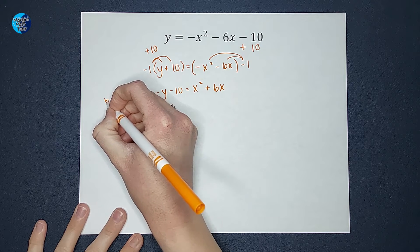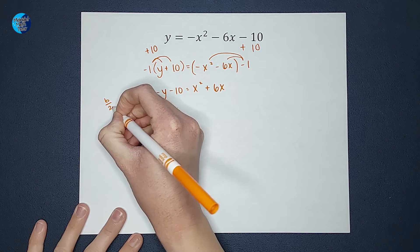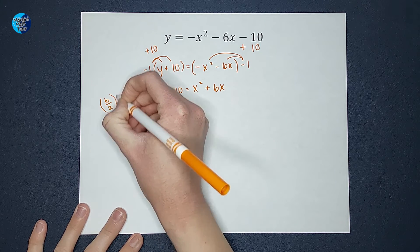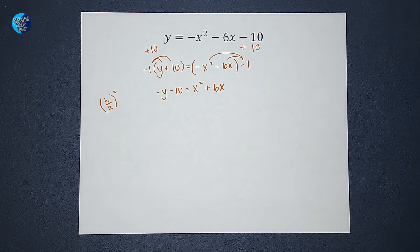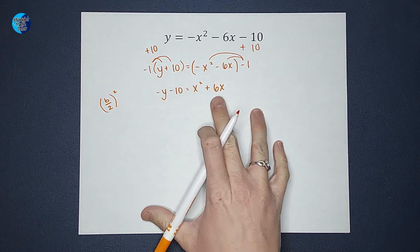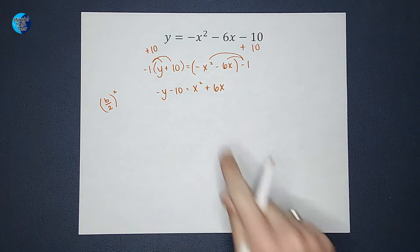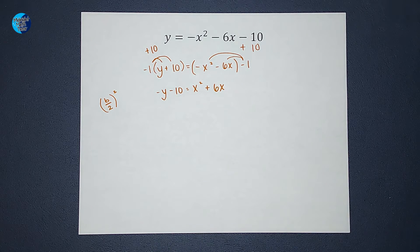Well, what I do is I take b, divide it by 2, and square it. Now if you're like, lady, there are zero b's on that paper. You may already know this, but the b is referring to the number in front of the x. So in this case, b is 6.